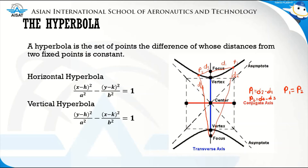Now let's go to the standard form of the equation of a hyperbola. There are two standard forms. For the horizontal hyperbola, the standard form is: (x minus h)² over a² minus (y minus k)² over b² equals 1. For the vertical hyperbola, the standard form is: (y minus k)² over a² minus (x minus h)² over b² equals 1.